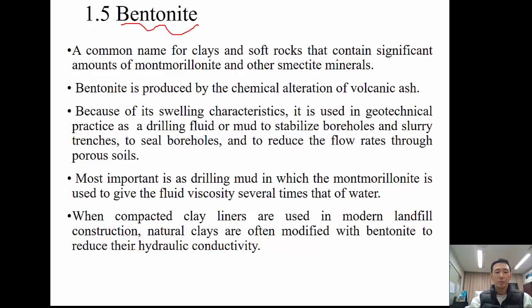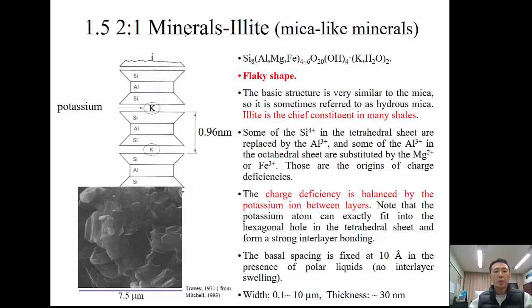Illite is another 2:1 type mineral, also called mica, with a flaky shape — sometimes referred to as hydrous mica. It is the chief constituent in many shale rocks. Some silicon in the tetrahedral sheets is replaced by aluminum, and some aluminum in the octahedral sheets is replaced by magnesium or iron. These are the origins of charge deficiency, which is balanced by potassium ions between layers, forming very strong ionic interlayer bonding. The spacing is fixed at 10 Ångströms.